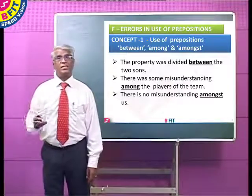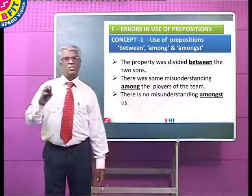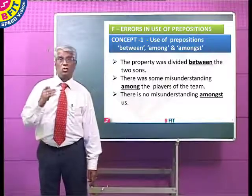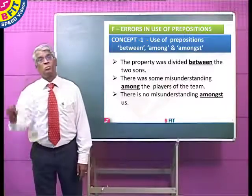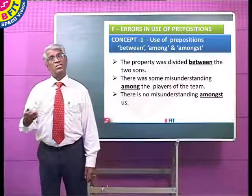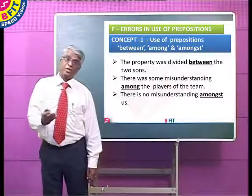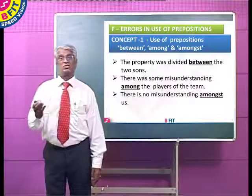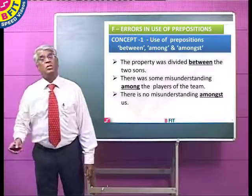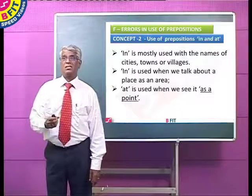If there are only two persons, you should not use 'amongst' but only 'between.' So 'among' is used when you talk of more than two persons, and 'amongst' is also used for more than two persons or things, but only when the next word starts with a vowel sound.